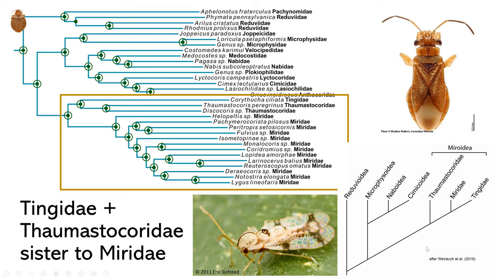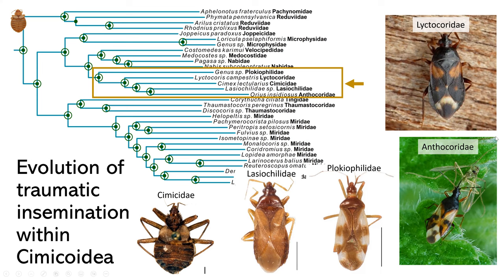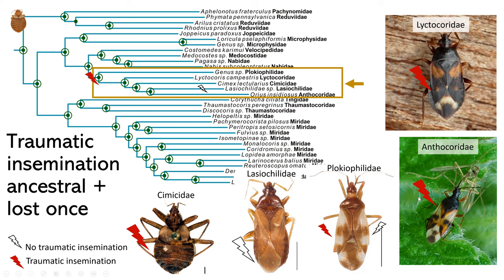Looking at the evolution of traumatic insemination within Cimicoidea, I have the families included in our analysis shown with red lightning bolts indicating where traumatic insemination occurs and white lightning bolts showing where it does not. Clocheophilidae has both red and white because they have some species with traumatic insemination and some without, and we only included one representative from each family.